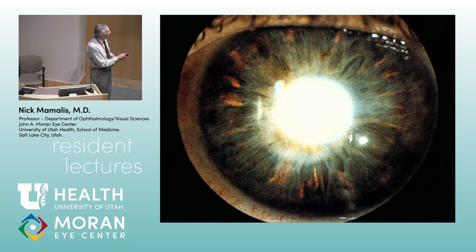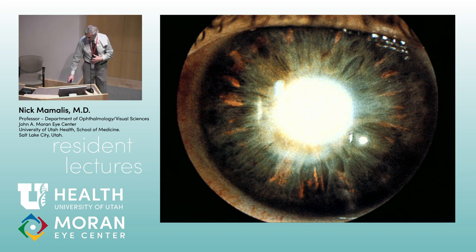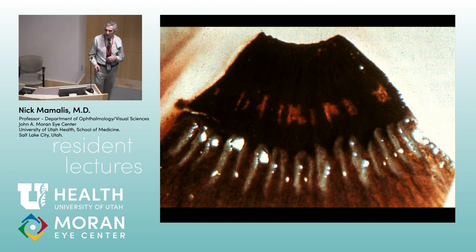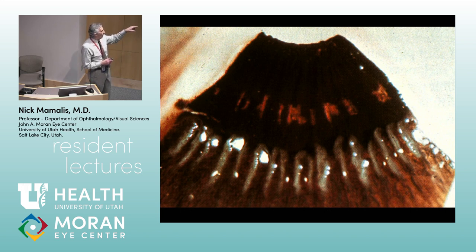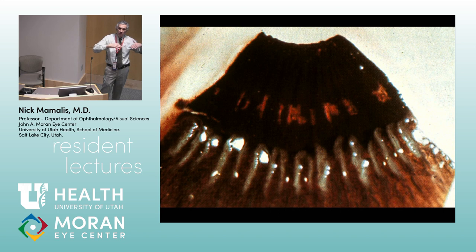Look at those little radial slit-like transillumination defects in the iris. That tells you that something is disturbing the pigment epithelium on the posterior surface of the iris. When that disturbs it, that pigment floats up and can cause secondary open-angle glaucoma. Here is a piece of an autopsy eye looking from behind — here's the iris, here's the ciliary body. Those radial areas of pigment dispersion are caused by the zonules. Those zonular bundles run from the ciliary body to the lens, and if you have a posterior bowing of the iris, you can get scraping of the posterior iris pigment epithelium on these zonular bundles.